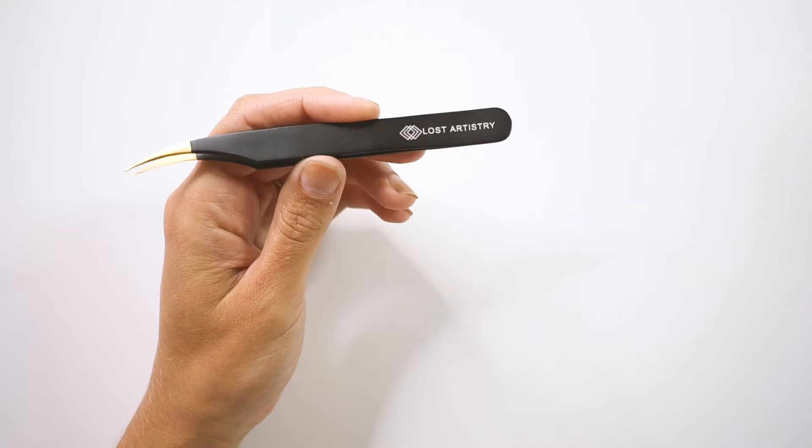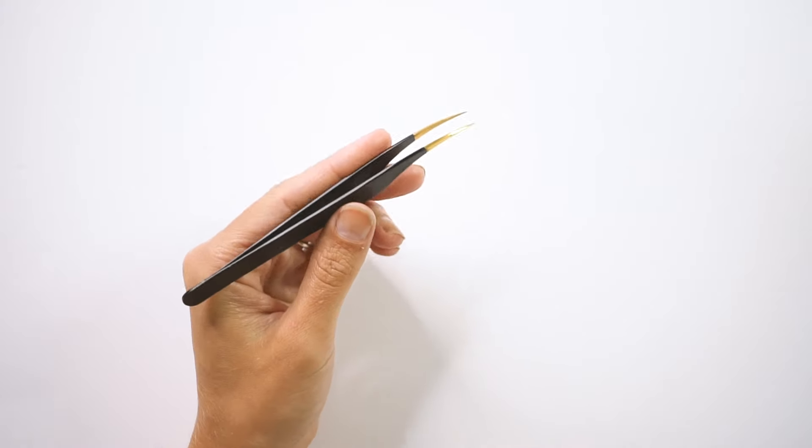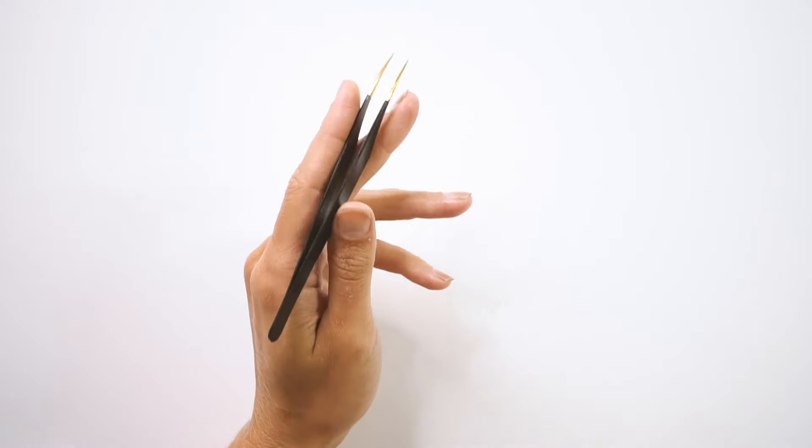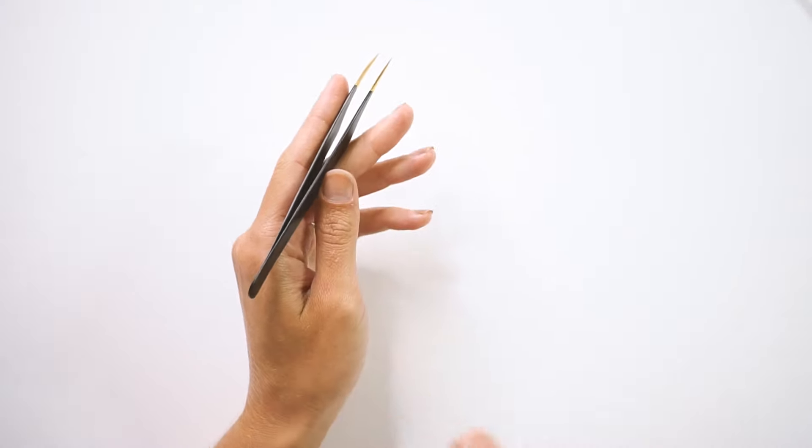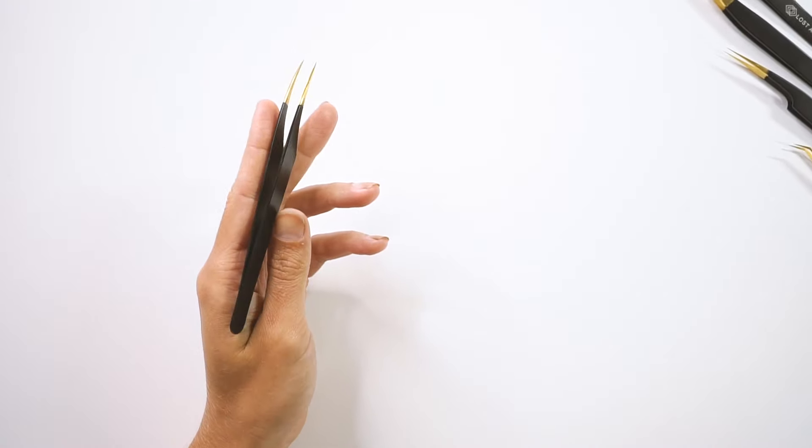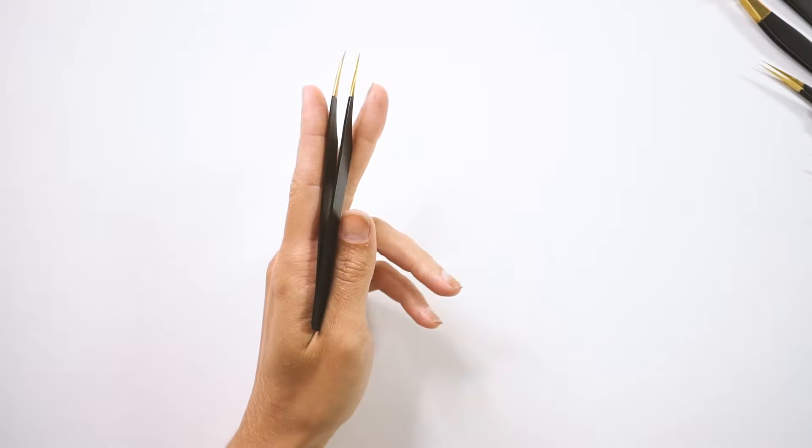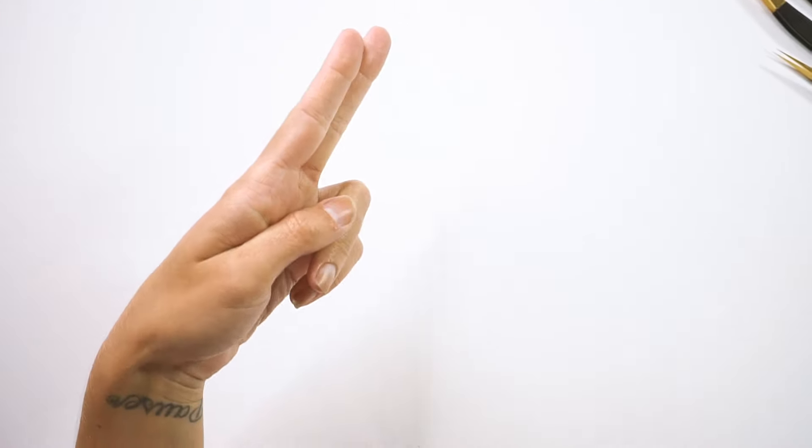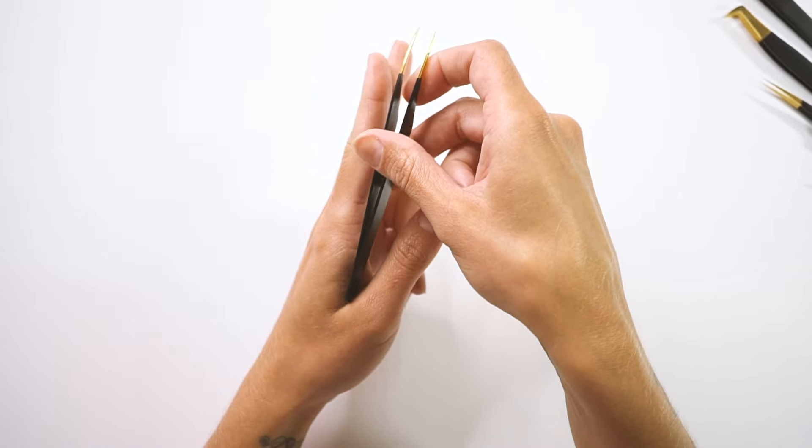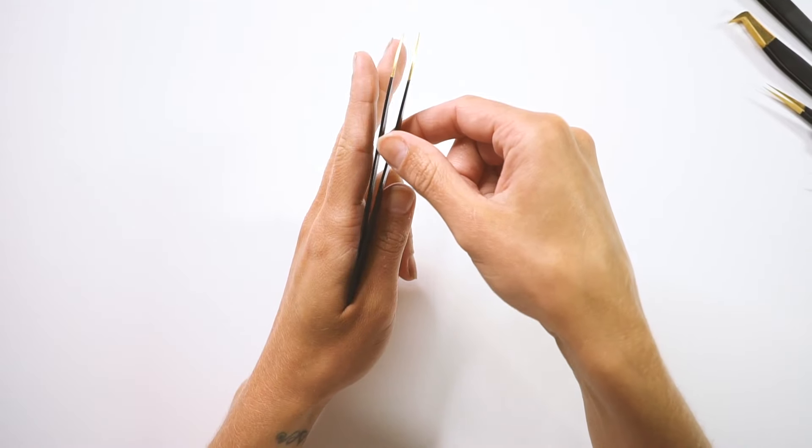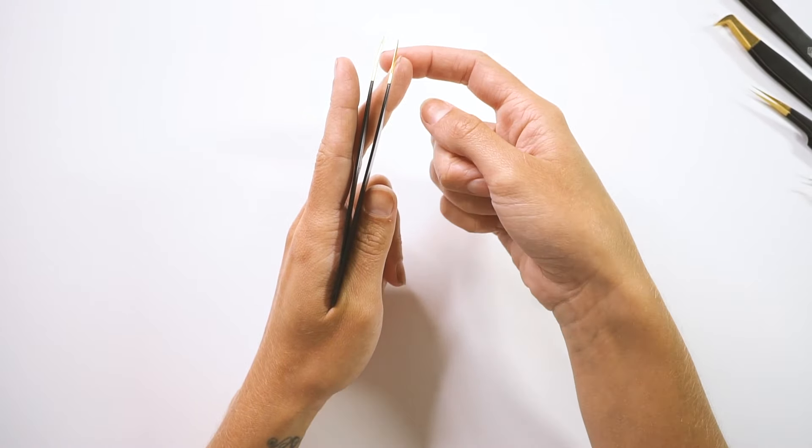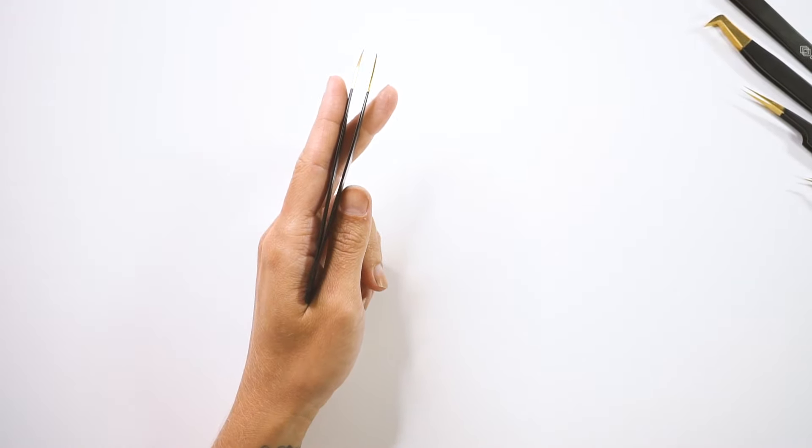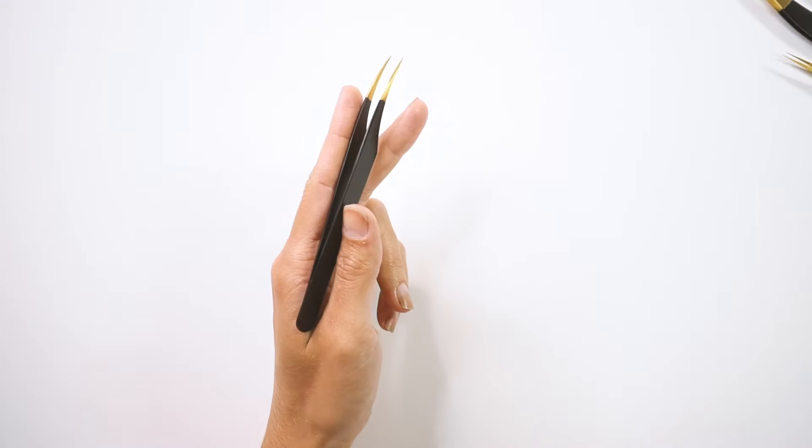First we're going to talk about how to hold our isolation tweezers. When we hold our isolation tweezers, our isolation tweezer is always held in our non-dominant hand with the tips pointing down. So when we hold our tweezers, first our hand should be as if we're pointing a gun. Then we're going to sit our tweezers in the crease of our hand between our thumb, and we're going to move our middle finger over for support underneath our isolation tweezers and sit like this so we can get used to the feeling of this.